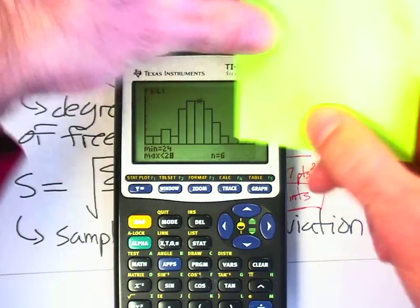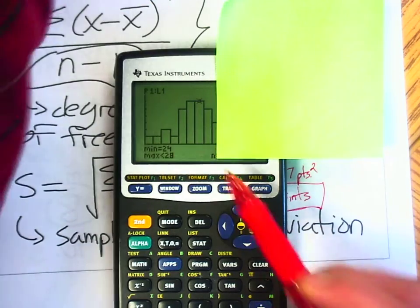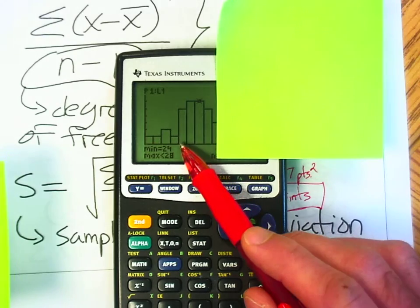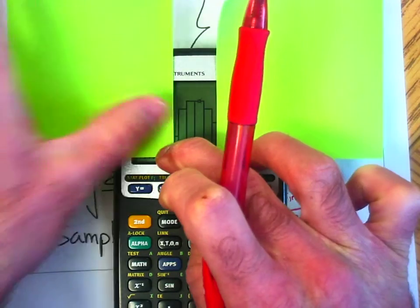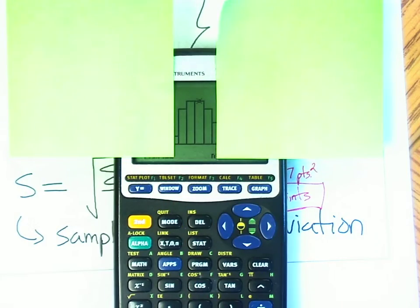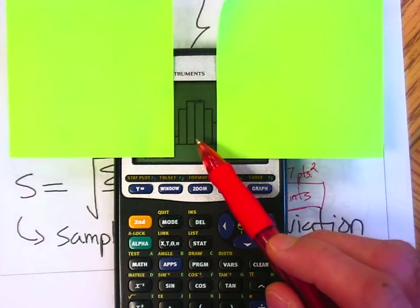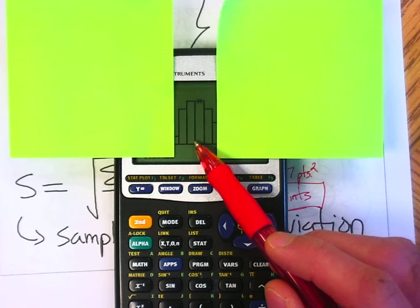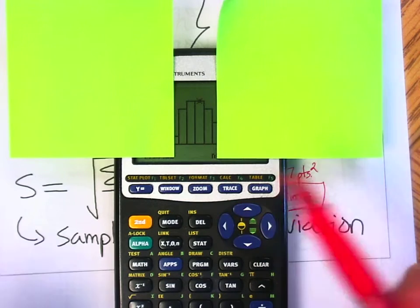Right here would be 9.5 points above the mean. So again, if I consider this the mean, then 1, 2, 3, 4, 5, 6, 7, 8, 9.5 points below the mean will be right about here. So using a sample standard deviation of 9.5, what this says is that a typical NFL team is going to score around 9.5 points above or below the mean. These are the typical scores.